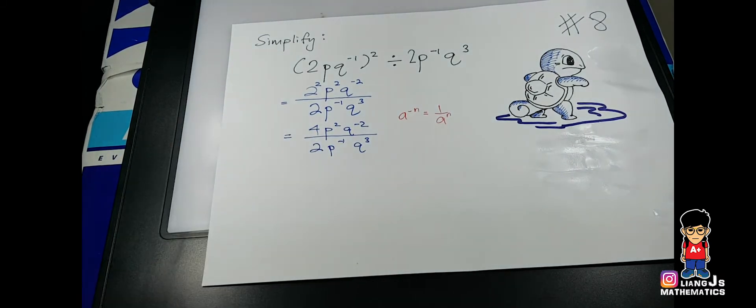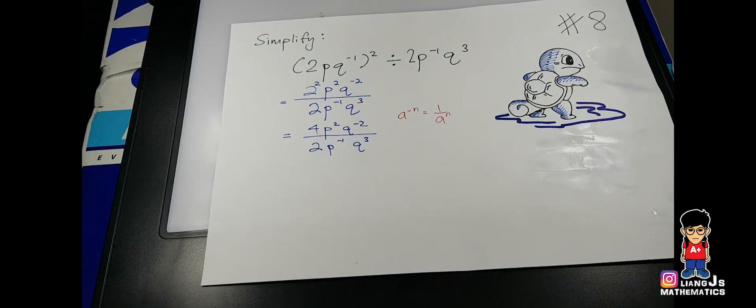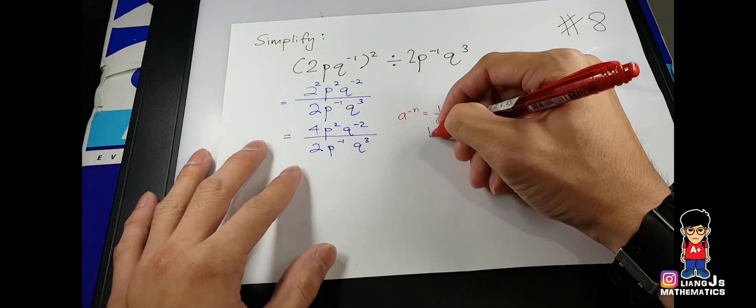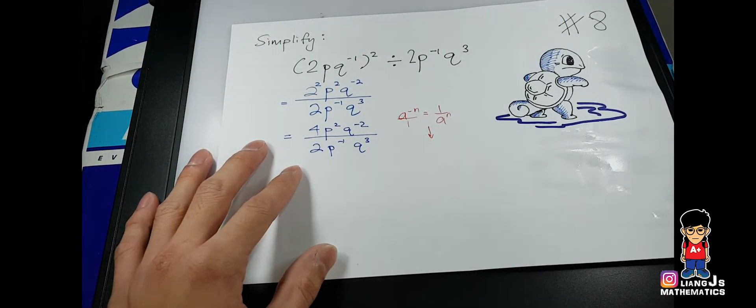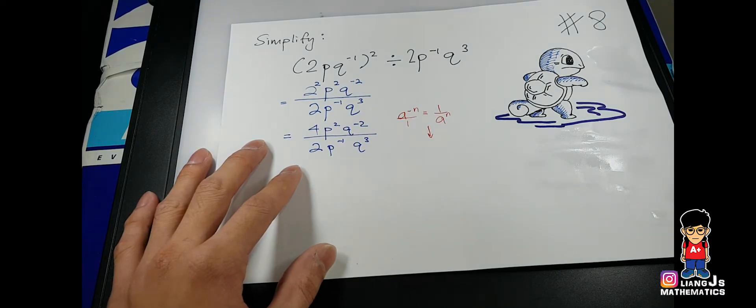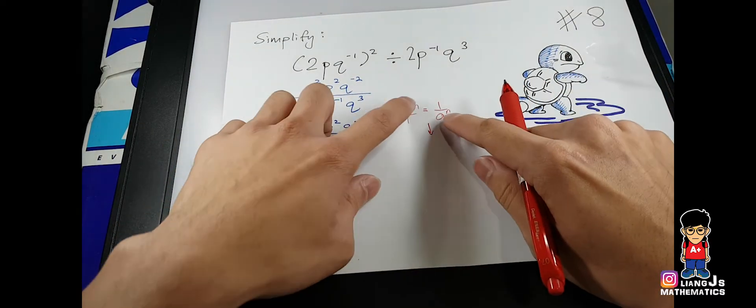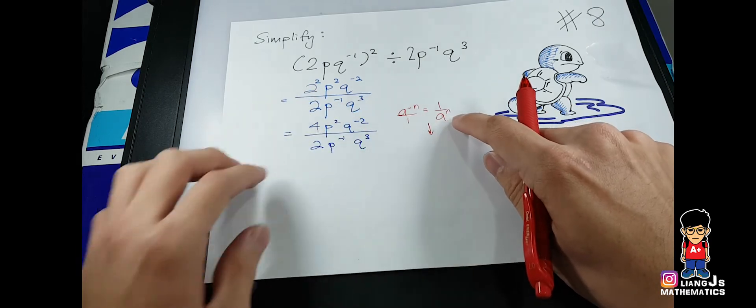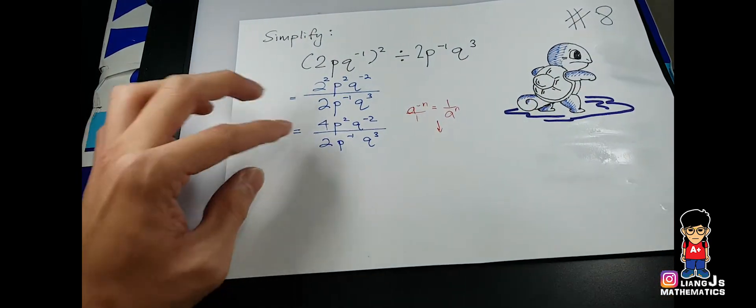Some of you might say, hey, why is it this way? Let me show you a better way of not to say understand, but how to convert it easily. We know that this is over 1. So if this is over 1, they are telling you that if you don't like the negative, just switch the position and then you just erase off the negative.